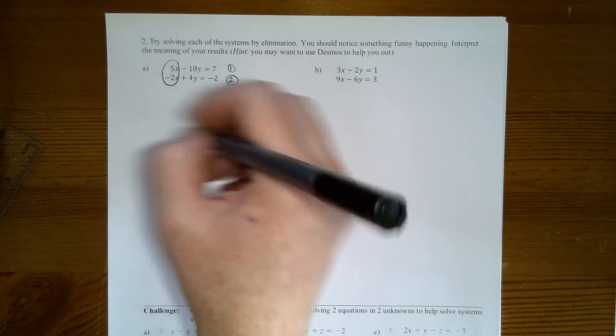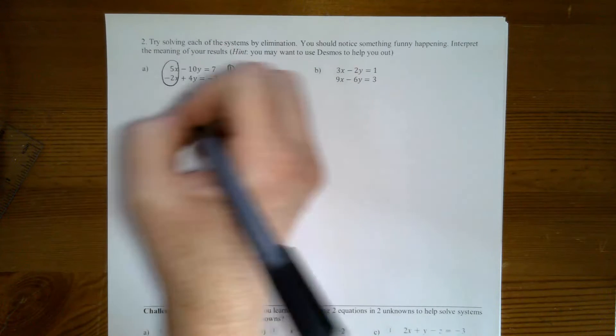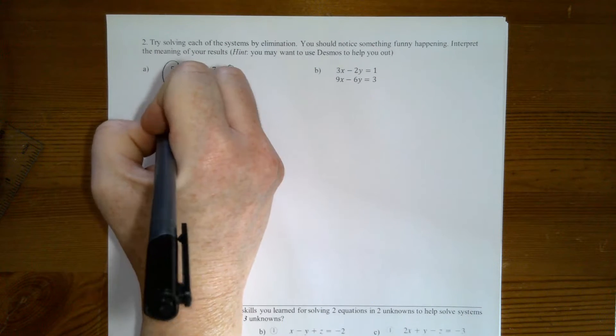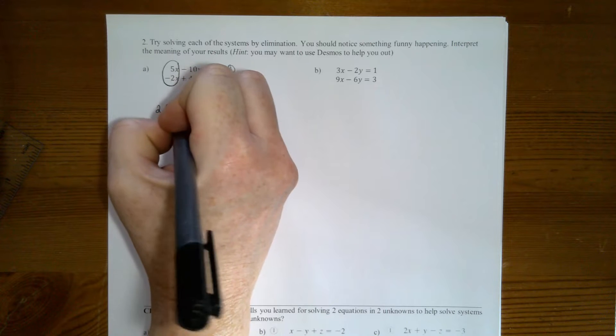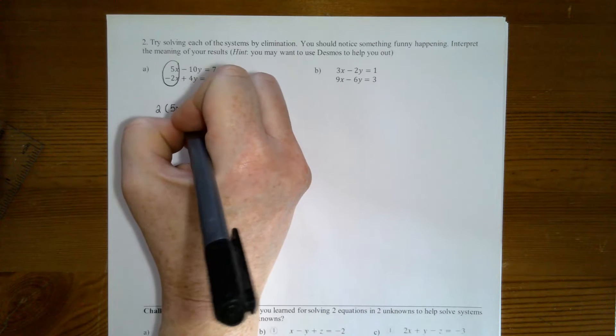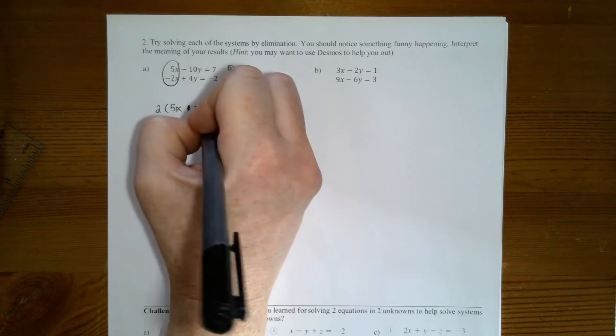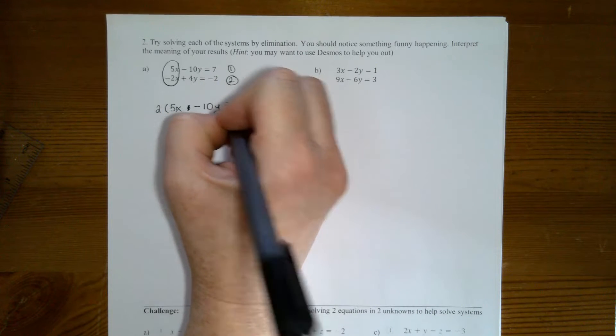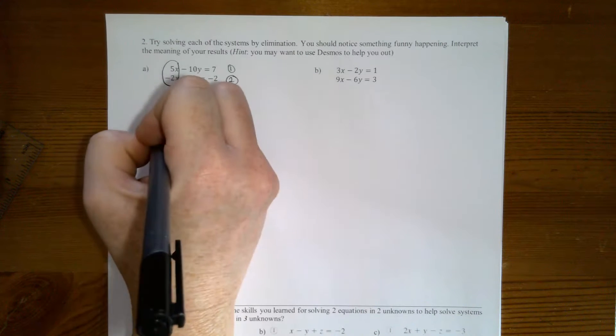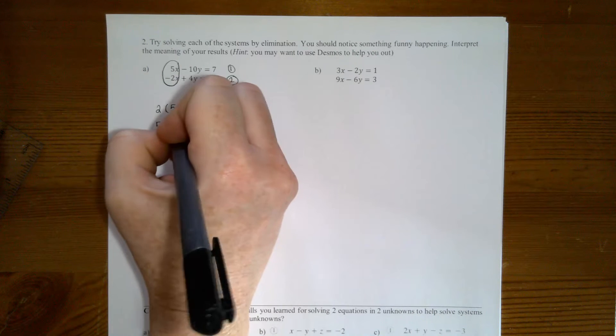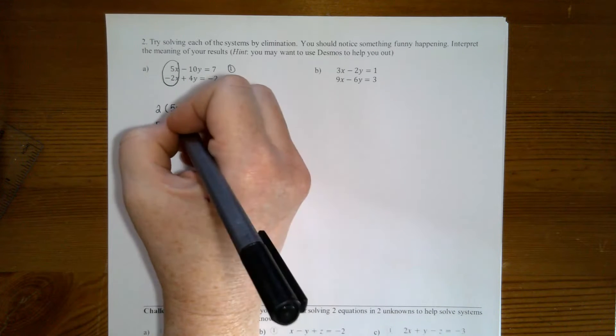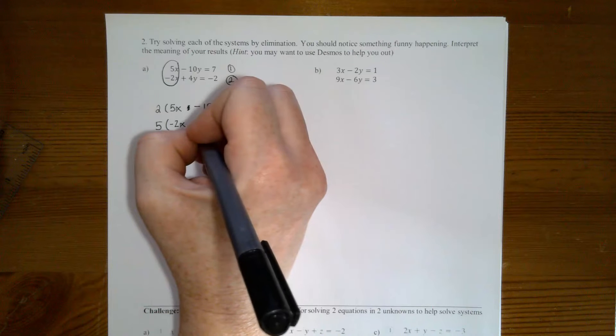So I am going to take the first equation and multiply it by 2. And then I'm going to take the second equation and multiply it by 5. And by doing that, I end up with 10x and negative 10x.